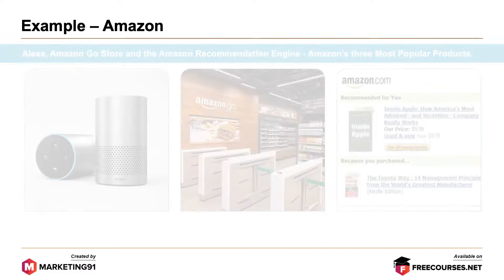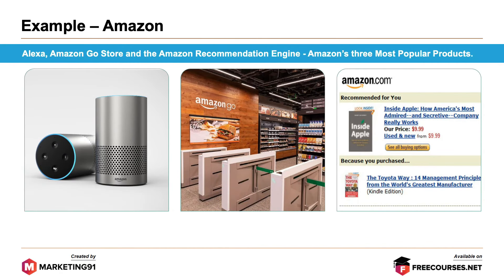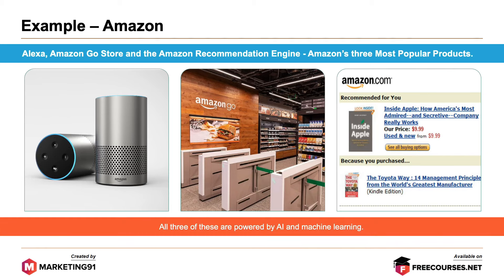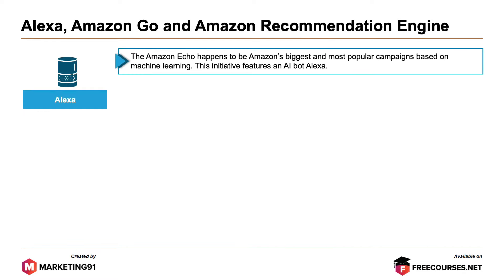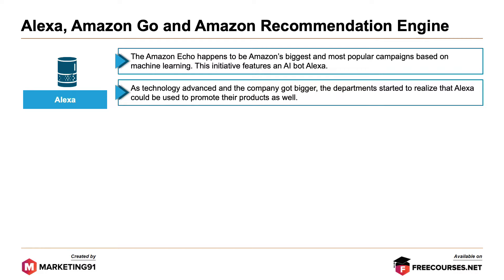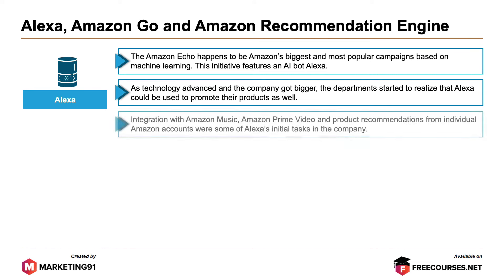Moving further, Alexa, Amazon Go store and Amazon recommendation engine happen to be Amazon's three most popular products. All three of these are powered by AI and machine learning. Starting with Alexa, the Amazon Echo happens to be Amazon's biggest and most popular campaign based on machine learning. The initiative features an AI bot Alexa. As technology advanced and the company got bigger, the department started to realize that Alexa could be used to promote their products as well. Integration with Amazon Music, Amazon Prime Video, and product recommendations from individual Amazon accounts was some of Alexa's initial tasks in the company.